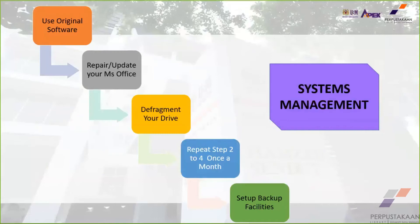For system management: before using the .dotx file or saving as a .docx file, you must use original software. That means you must download Microsoft Office, and you must repair or update your Microsoft Office to the latest version. You can also download it from the campus online portal. Defragment your drive and repeat steps two to four once a month. You must also set up backup facilities.